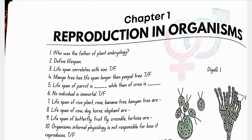Chapter 1: Reproduction in Organisms. Who was the father of plant embryology? Panchanan Maheshwari. Define lifespan. The period from birth to natural death is called the lifespan.